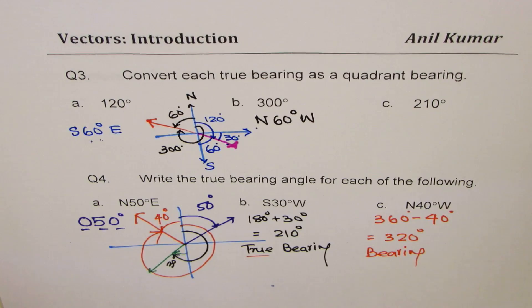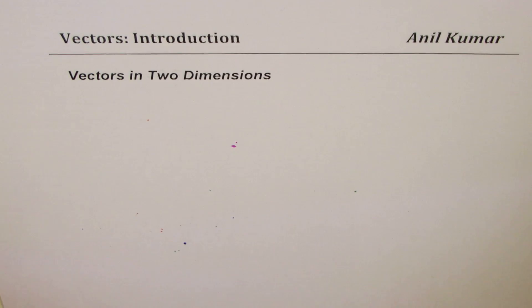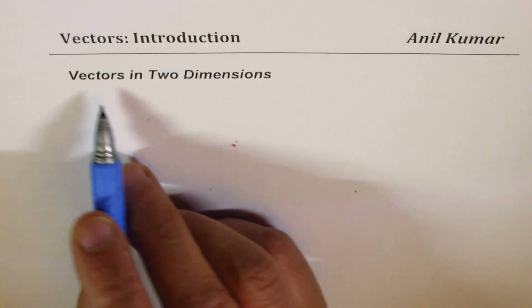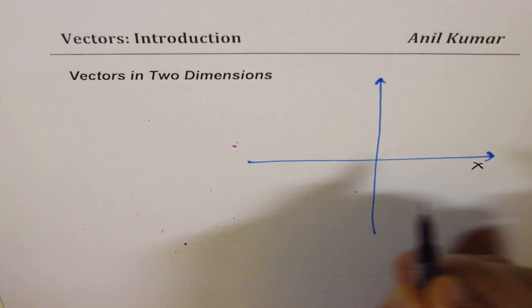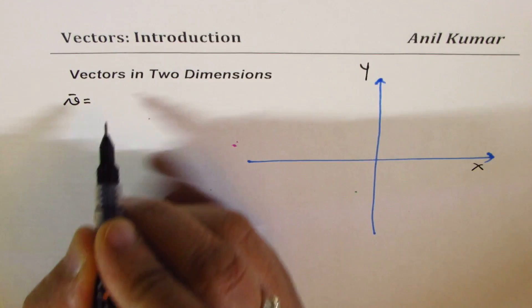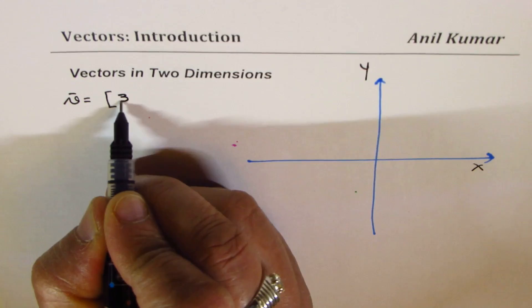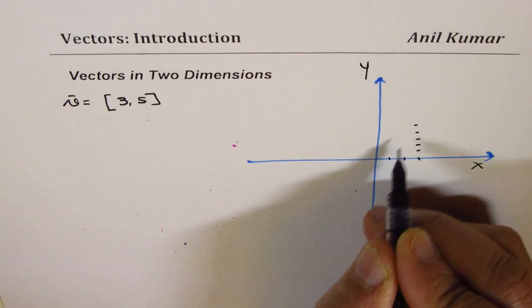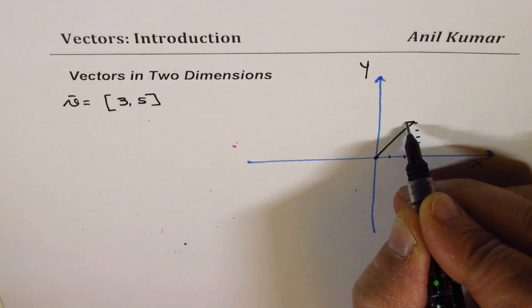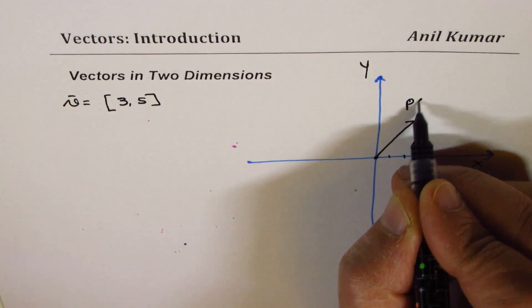Let's now talk about vectors in two dimensions. Vectors could be represented in two dimensions or three dimensions. In two dimensions — the R2 plane or Cartesian plane — we have X and Y coordinates. For any vector, if I say vector V is [3, 5], it really means you move 3 units along X and 5 units along Y from the origin, with the tail at the origin and head at point P(3, 5). Connect those and you get your vector V.